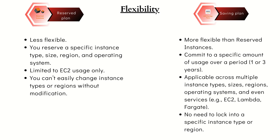In Saving Plan, you commit to a specific amount per hour rather than a specific instance type or family. However, in Reserved Instance, you commit to a specific instance type in a specific region for a defined term. Saving Plan allows you to switch between instance type, instance family, and even change the operating system, availability zone, and region. Whereas in Reserved Instance, you can change the instance type but only within the same family.